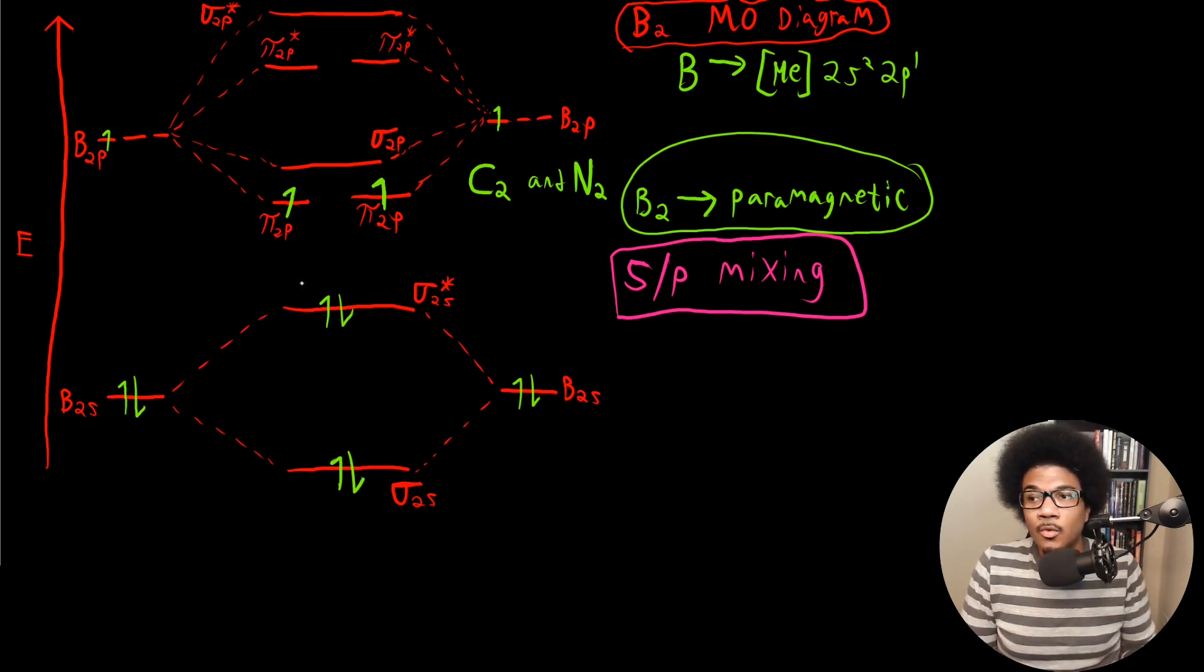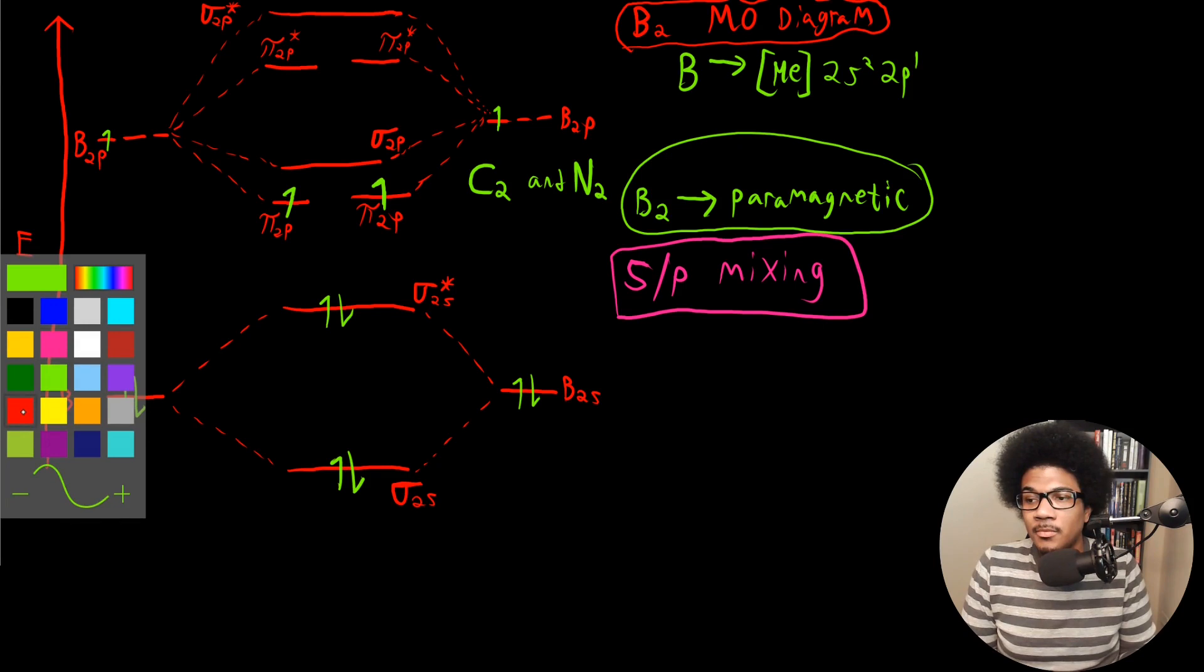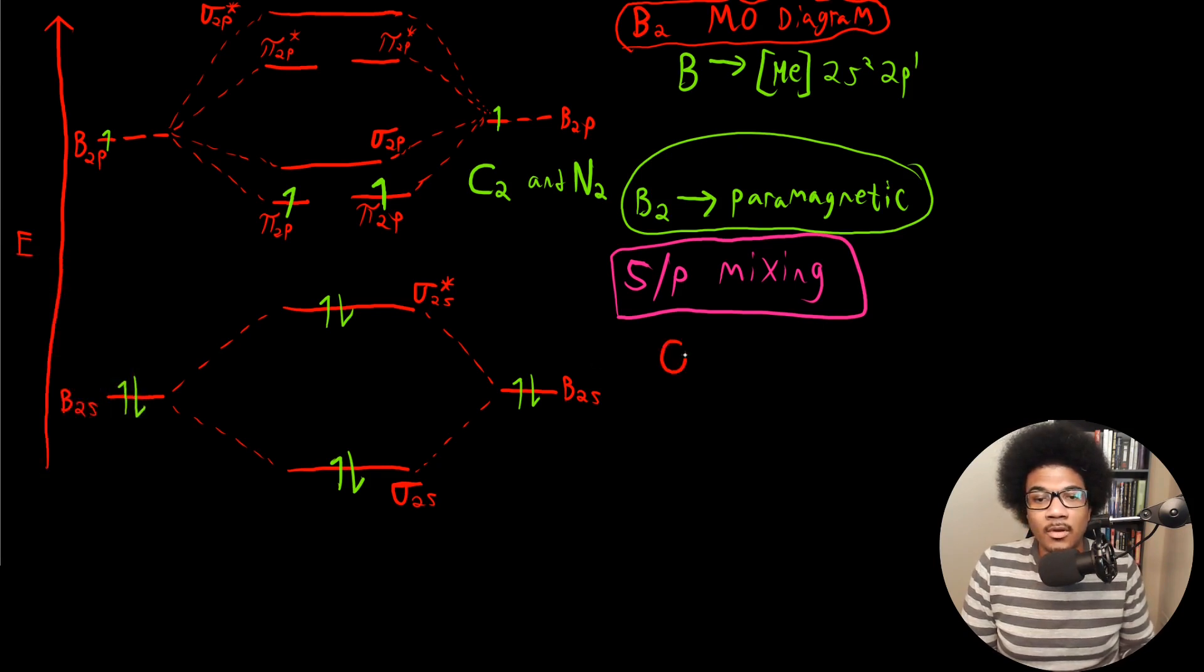Now when you get to O2 and F2, this is going to revert back to the original energy ordering. So in O2 and F2, the pi 2P is going to be greater in energy than the sigma 2P.